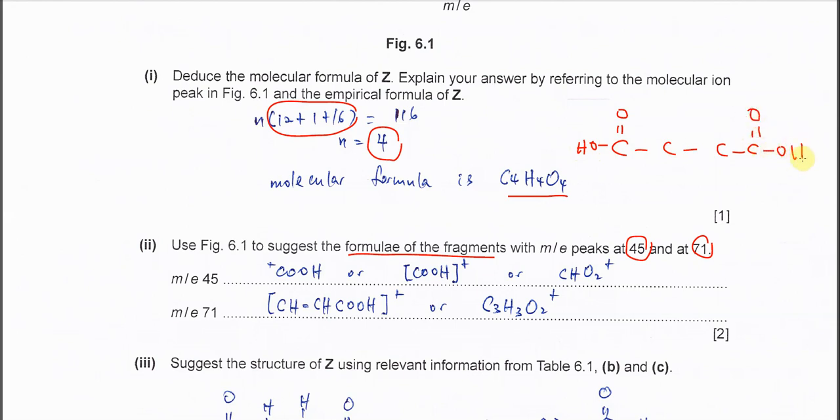After that we add the double bond. The double bond cannot go here or here, must be here. Complete the hydrogen number so we get the structure right.